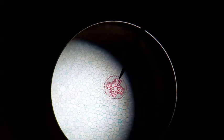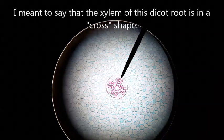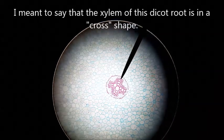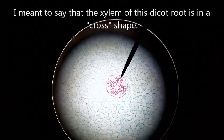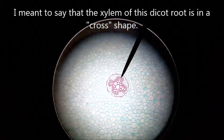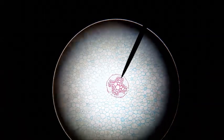In this 100x magnification, the dicot root of this ranunculus is in a cross shape. The reddish center cross is the xylem. Between the arms is the phloem and then the ring is the endodermis.